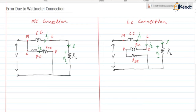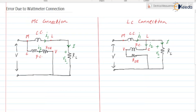In the wattmeter we have four terminals: M is the main, L is the load, C is the common, and V is the voltage terminal. When M and C are shorted it is known as the MC connection. When L and C are shorted it is known as the LC connection. Here we have the circuit diagram showing the MC connection with supply voltage V and a resistive load. For the LC connection, we similarly have supply voltage V, load resistance R_L, and the four terminals of the wattmeter.